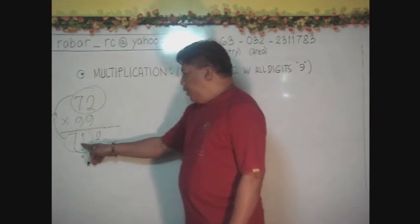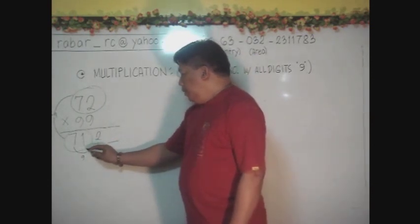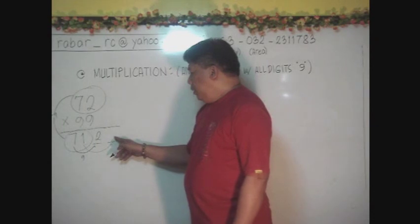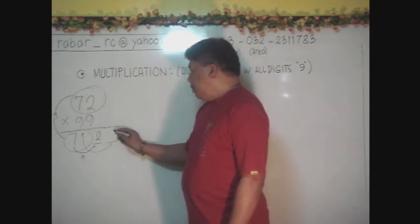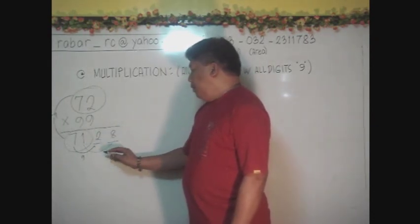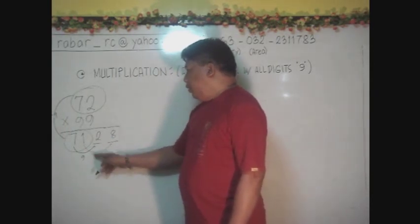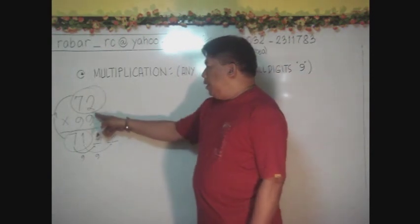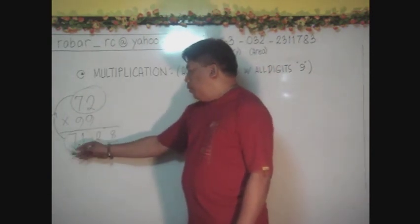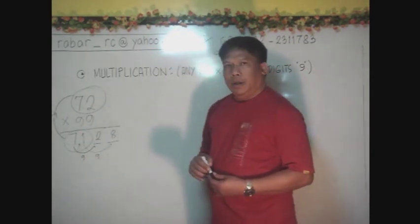And this must be 9. This one also, in order to become 9, for this digit here, you have 8. Remember, 1 plus 8 is 9. So that will give you a complete answer of this 72 times 99, which is equal to 7,128.